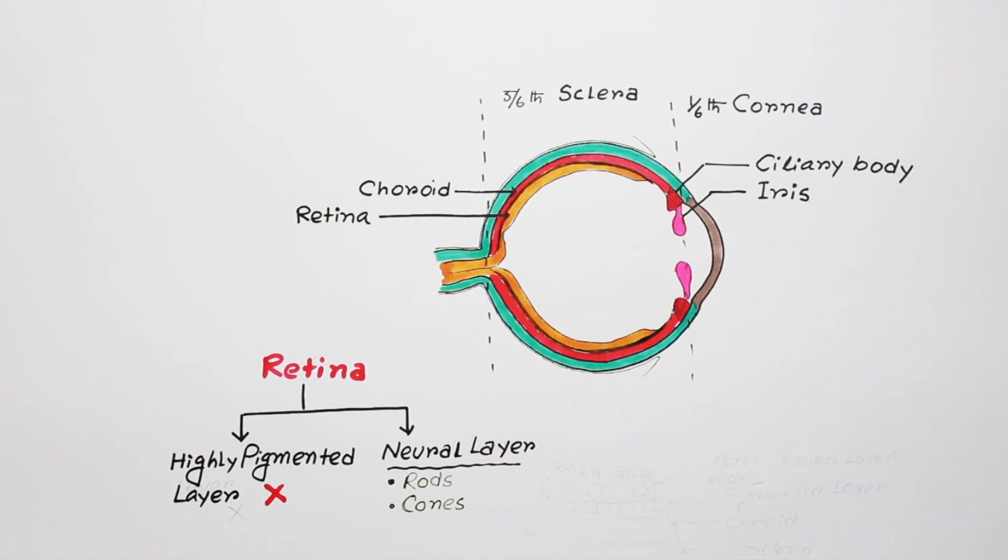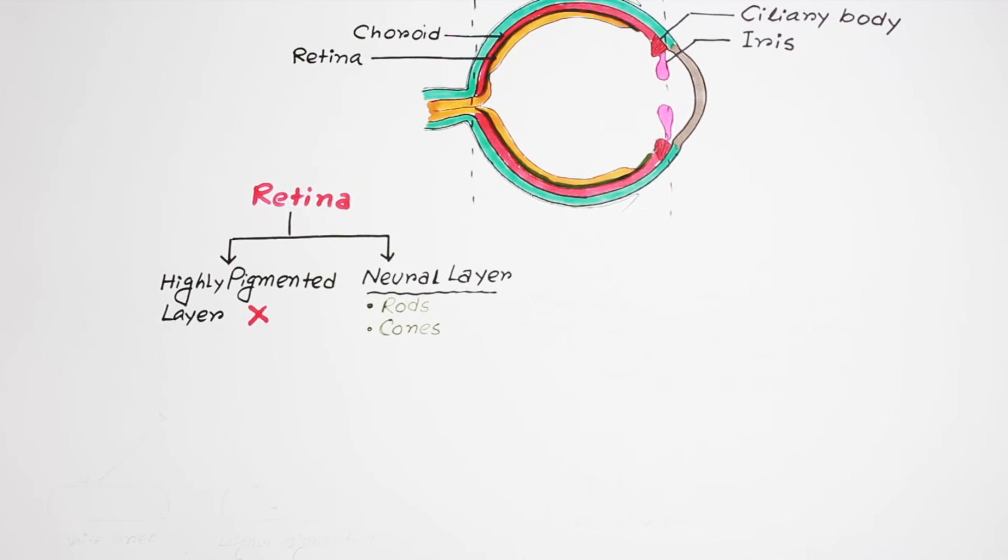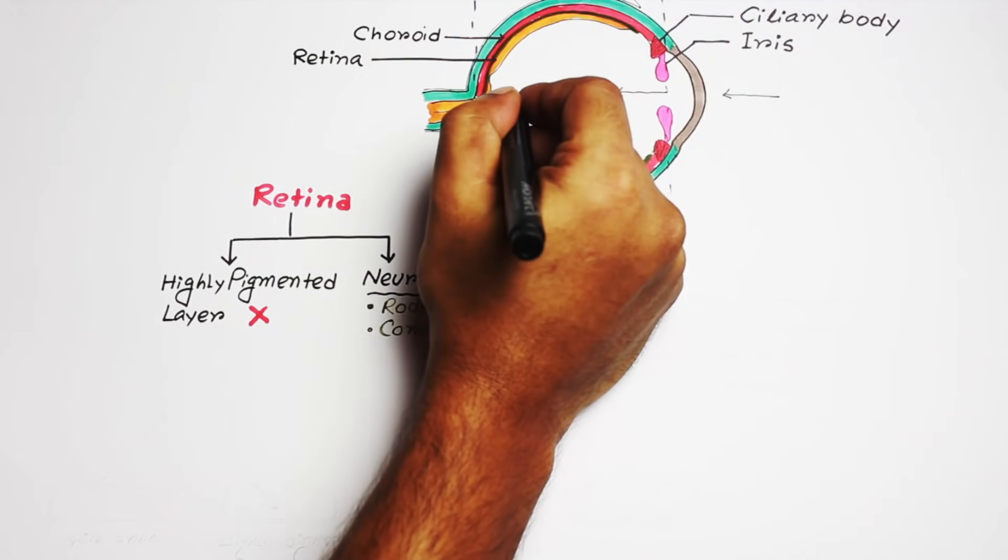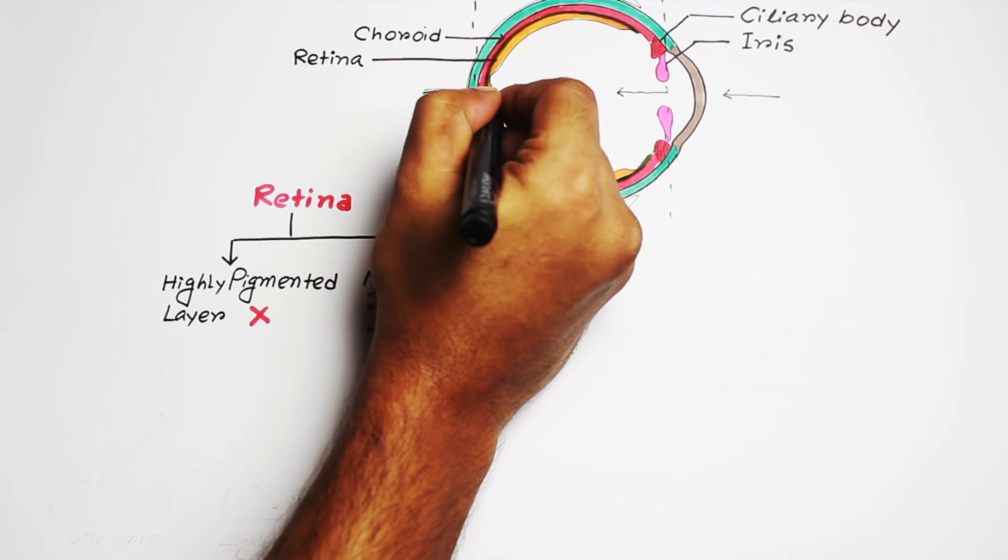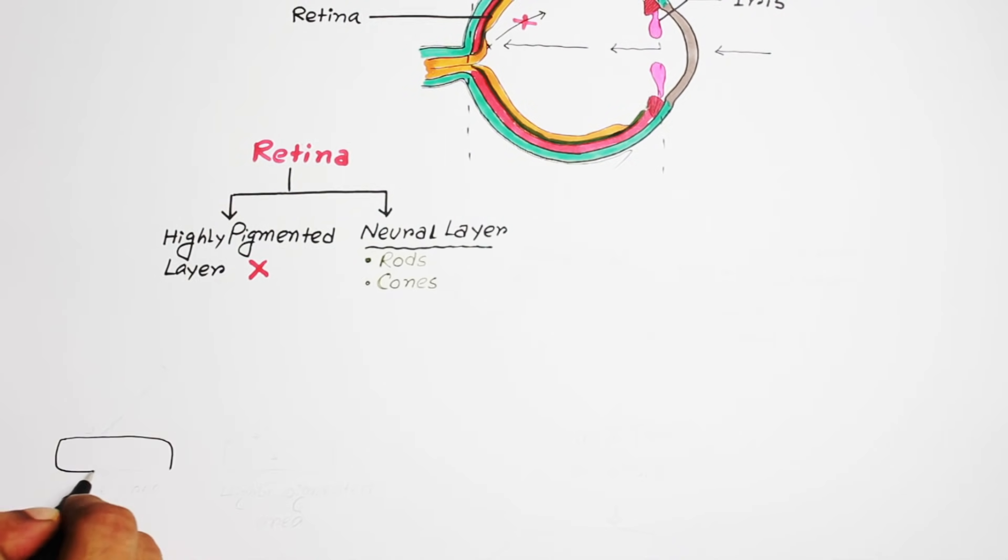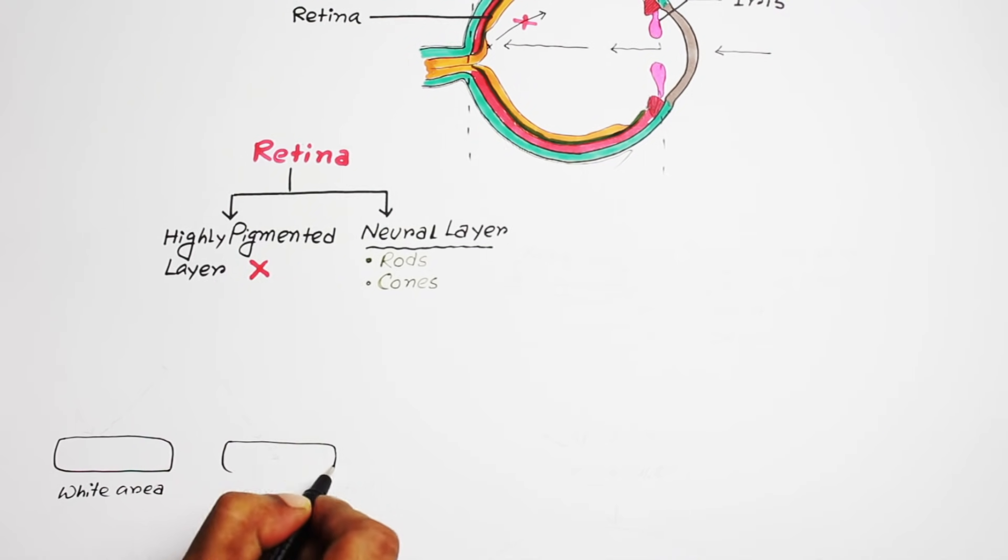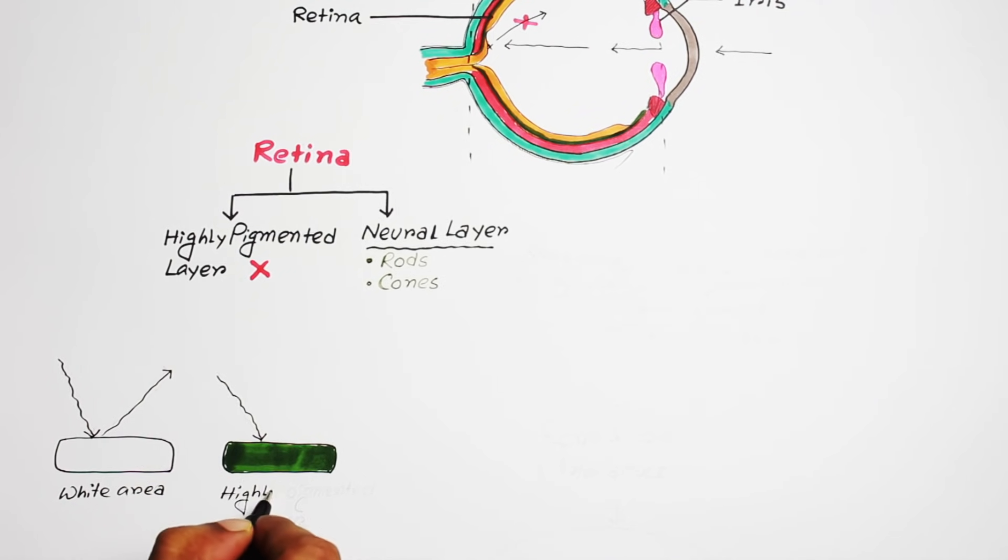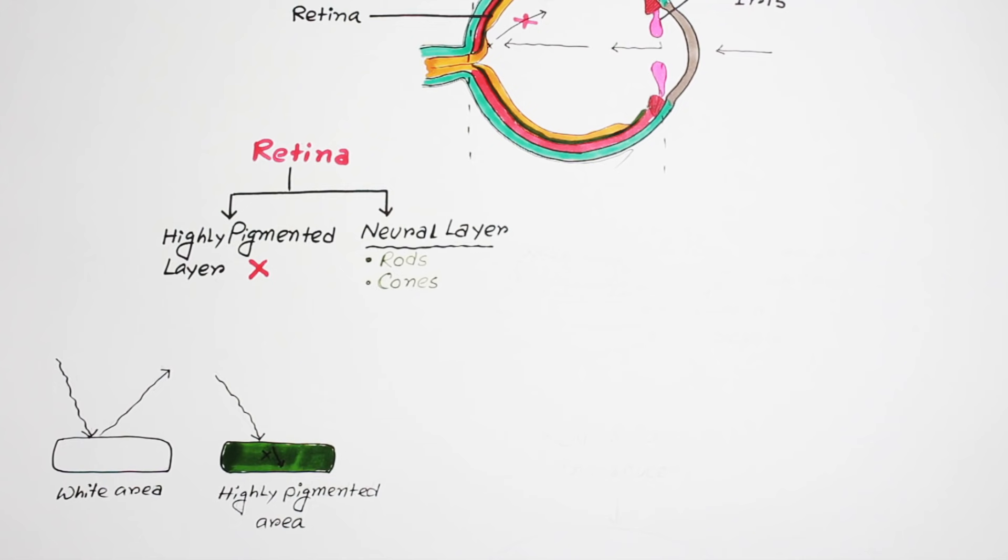You must be wondering, why is it hyperpigmented and what's the use of hyperpigmentation? Well, when light comes into our eyeball, it should get absorbed first and shouldn't get reflected. Otherwise, the image will be destroyed. As we know, highly pigmented areas absorb light better than white or poorly pigmented areas. That's why this inner retina layer is highly pigmented.